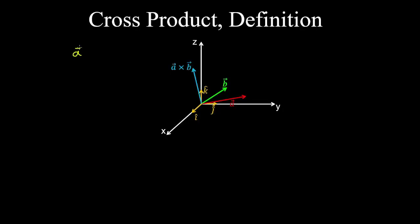Recall when we took the dot product between two vectors a and b, that returned a scalar. Here we'll define the cross product between two vectors, which results in a vector that's perpendicular to both vectors.